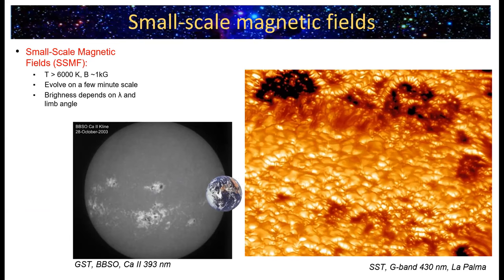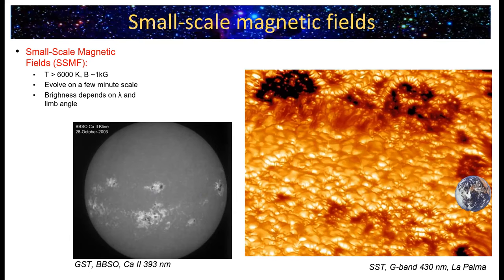When we go to a more active sun, we see facula, which can be seen in blue wavelengths with ionized calcium lines, the G-band containing molecular lines sensitive to temperature and brightness, and other wavelengths. These facular regions are much hotter than the rest of the surface and are brighter, and that brightness depends on wavelength, limb angle, and evolves on a few-minute scale.